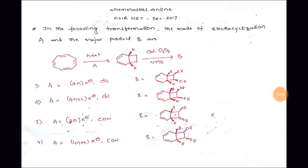Welcome to Chemasters Data Online. This question is from CSIR NET December 2017. In the following transformation, we need to find the mode of electrocyclization A — whether the given substrate is a 4-electron or 4n+2 electron system — and then, after applying osmium tetroxide in the presence of N-methylmorpholine N-oxide (NMO), find the major product B and its stereochemistry.